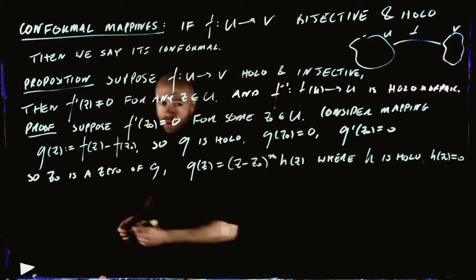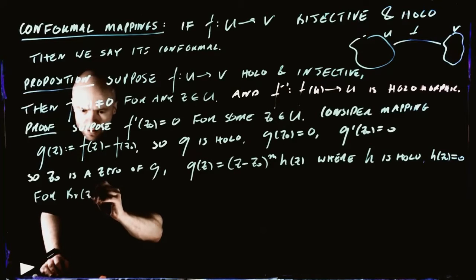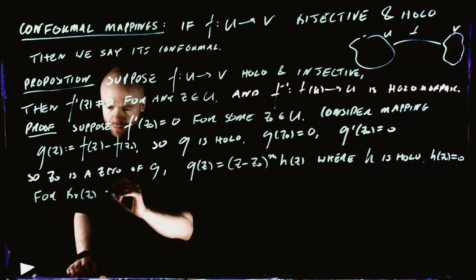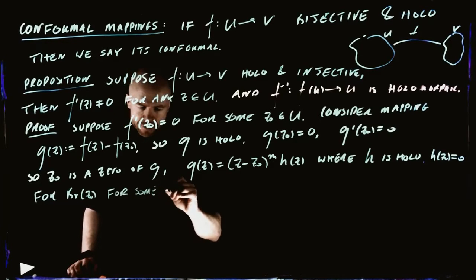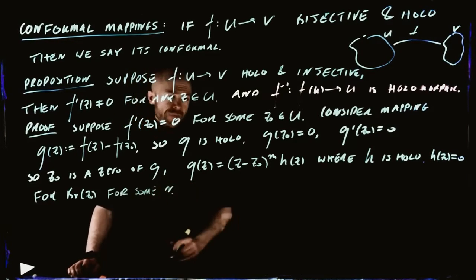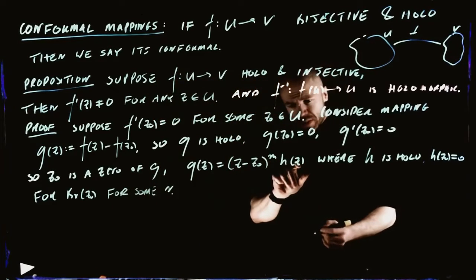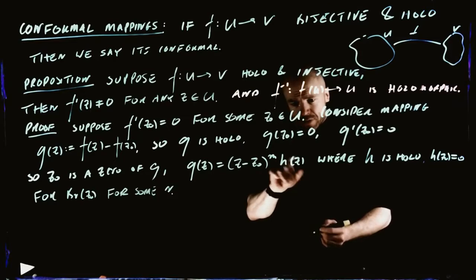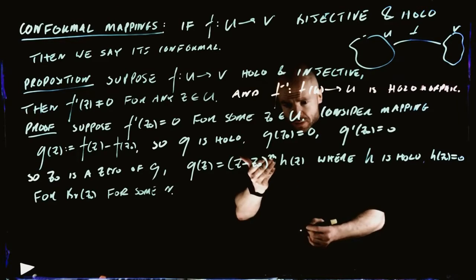A lot of stuff comes out from the fact that we can explicitly say what things behave like around their zeros, because we have this form where H is holomorphic and H(Z0) is not equal to 0. And this holds true in some neighborhood.